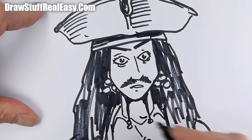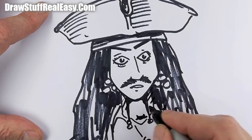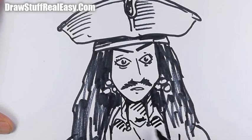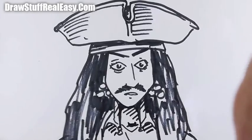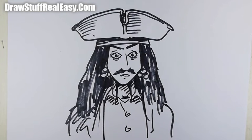Under there, that's his Adam's apple, and maybe a bit of shading under there like that, a bit of shading under there. I'm going to zoom it out a bit, and there you go, how to draw Captain Jack Sparrow.